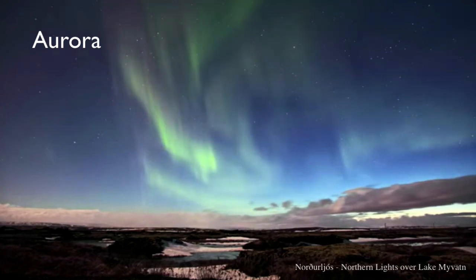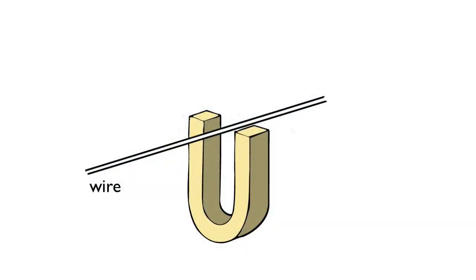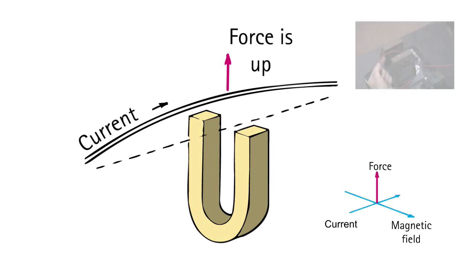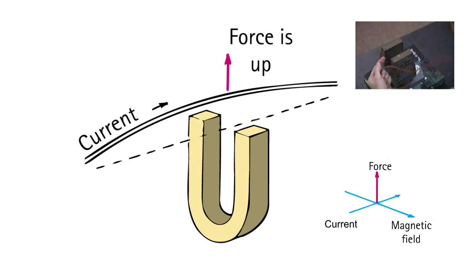Consider a wire passing between the poles of a horseshoe magnet. Electrons passing through the wire create a magnetic field. The interaction between this magnetic field and the field of the horseshoe magnet causes a deflection of the wire.